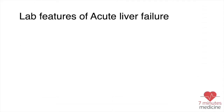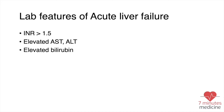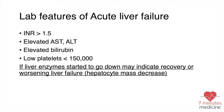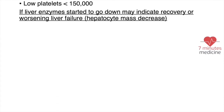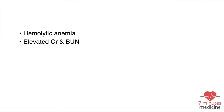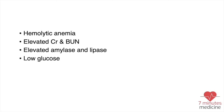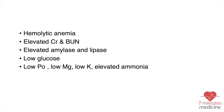For lab work, the INR is elevated more than 1.5, liver enzymes and bilirubin are elevated, and platelets are low. If the liver enzymes start to go down, this may indicate either recovery or worsening, so you have to examine the patient clinically to decide. Other important findings include hemolytic anemia, elevated creatinine — which is a key indicator of poor prognosis — elevated amylase and lipase, low glucose, low phosphorus, low magnesium, low potassium, elevated ammonia, and elevated lactate.